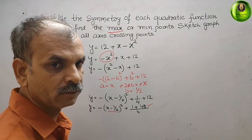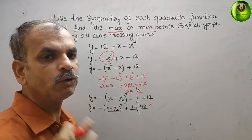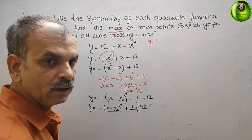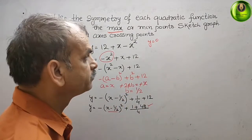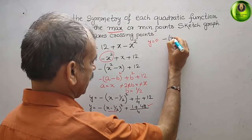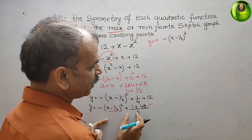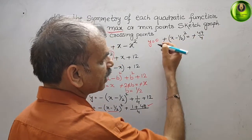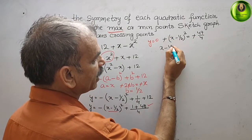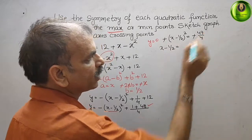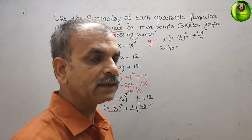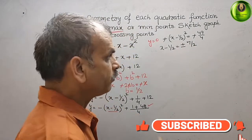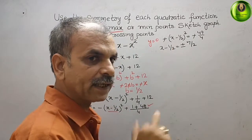Now we set y equal to zero to find the x-intercepts. Rearranging, minus of x minus 1 by 2 whole square equals minus 49 by 4. The negatives cancel, giving x minus 1 by 2 whole square equals 49 by 4. Taking the square root, x minus 1 by 2 equals plus or minus 7 by 2. We consider both the positive and negative cases.